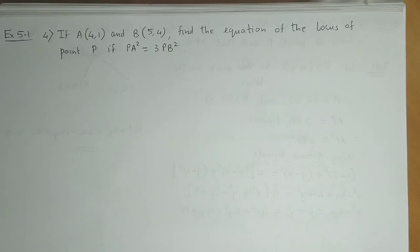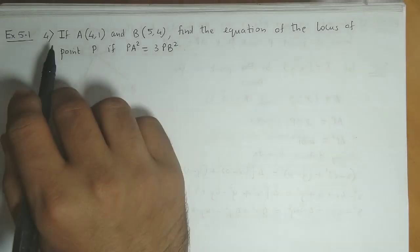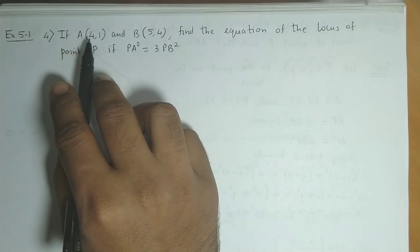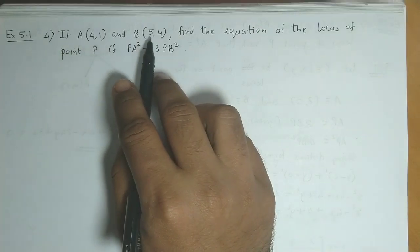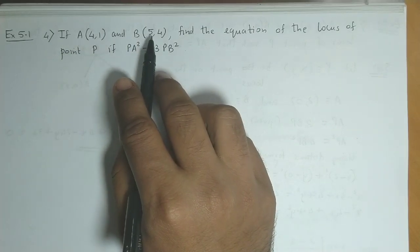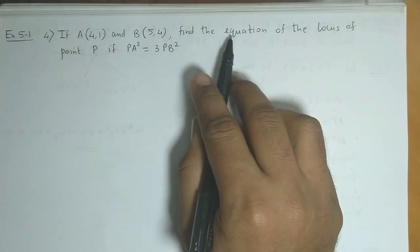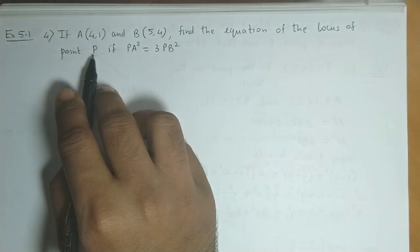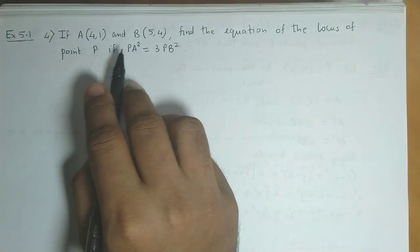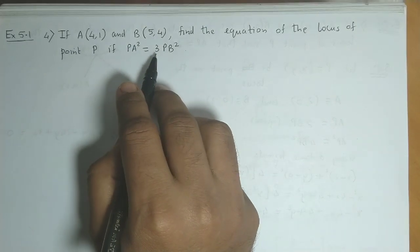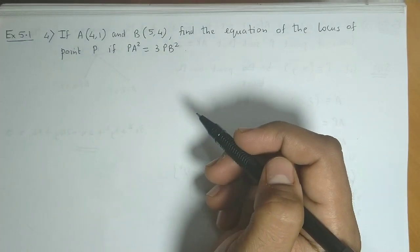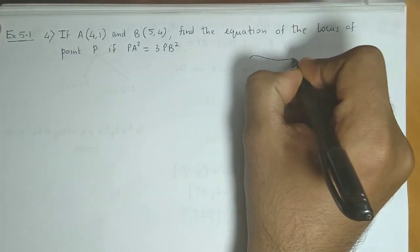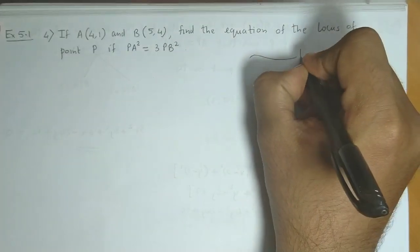Exercise 5.1, Question No. 4. If point A has coordinates (4,1) and point B has coordinates (5,4), find the equation of the locus of point P if PA squared is equal to 3 times PB squared. So suppose this is our locus.